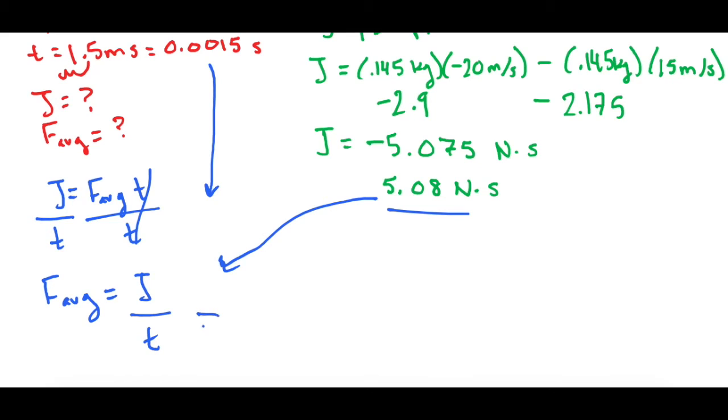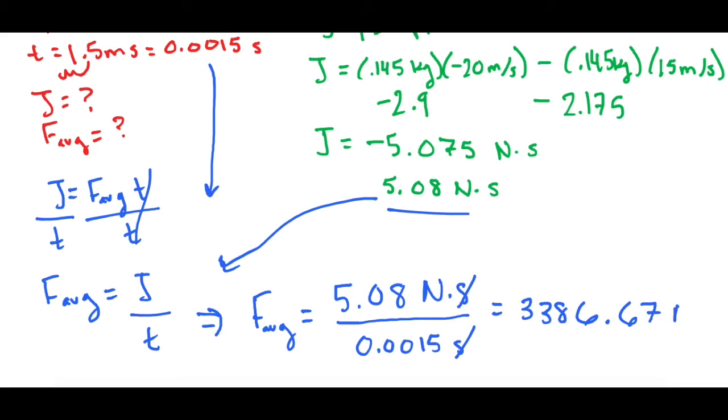So the average force equals 5.08 newton times seconds divided by the change in time, 0.0015 seconds. The seconds cancel and we're left with the correct units. And 5.08 divided by 0.0015 gives us 3,386.67 newtons. Now, in Mastering Physics, they obviously won't want this many significant figures, but you can round to however many they tell you they need.